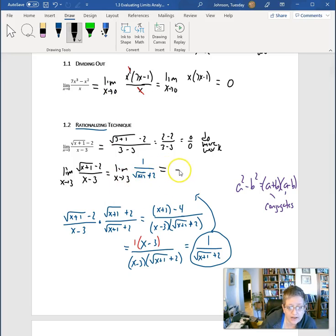As x approaches 3, we now have 1 over 3 plus 1 under the radical plus 2. 3 plus 1 is 4, square root of 4 is 2, 2 plus 2 is 4. So we have found the original limit. And you can check it graphically and numerically, you're going to get 1 fourth.